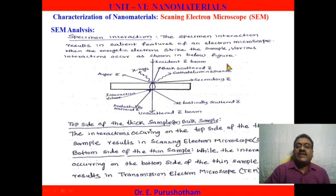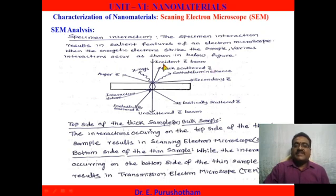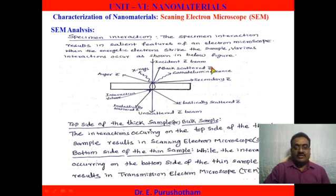The backscattered electrons depend on the sample atomic number. If the sample atomic number is more, we get a brighter image. If the atomic number of the sample is less, we get a less bright image of the backscattered electrons.